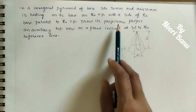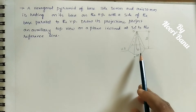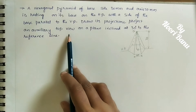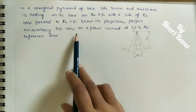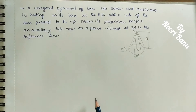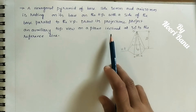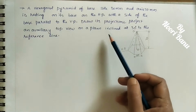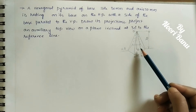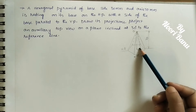We need to draw its projections — that is the front view and the top view of the pyramid. Also, we need to project an auxiliary top view on a plane inclined at 30 degrees to the reference line. For doing the auxiliary views, we create one new reference line. That plane is tilting 30 degrees. Initially we will do the projections, and after that we will do the auxiliary view.